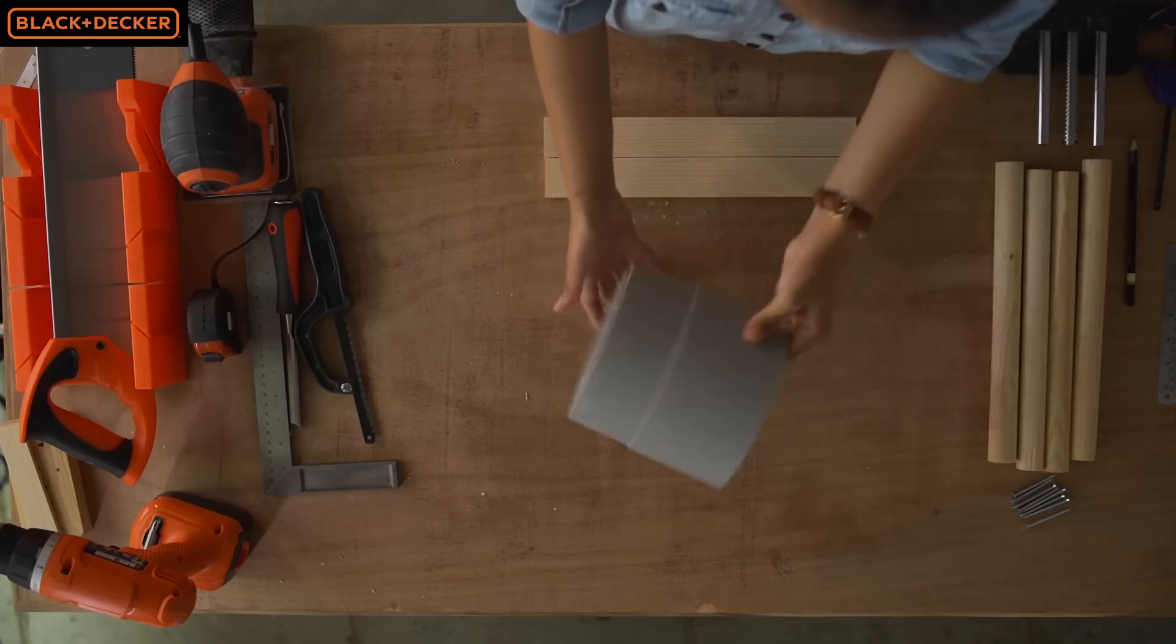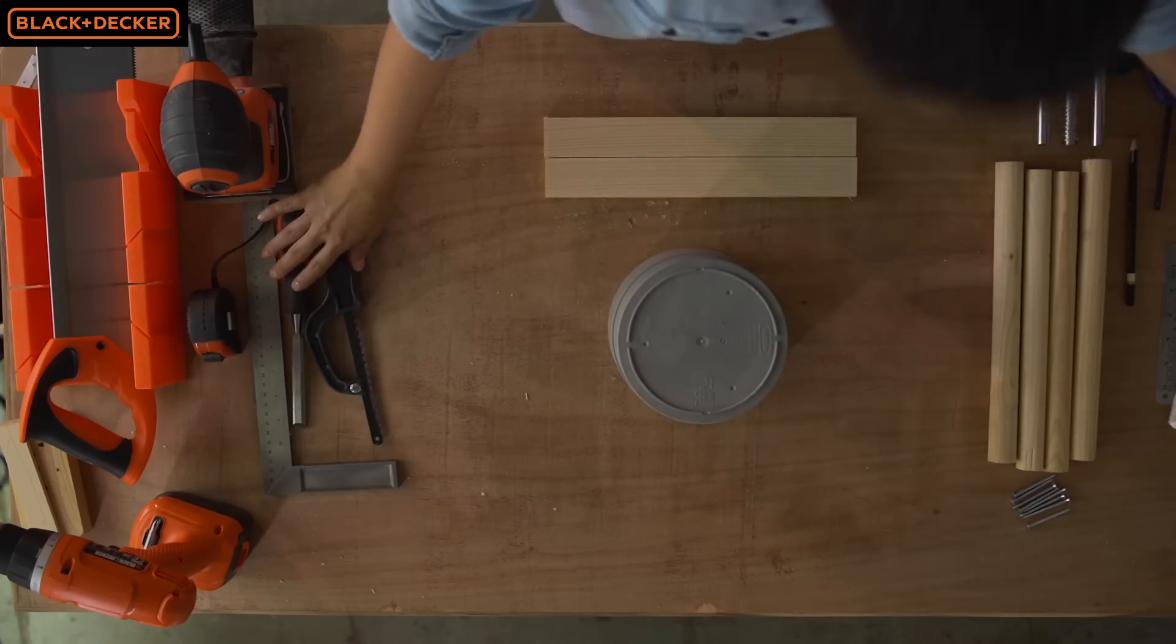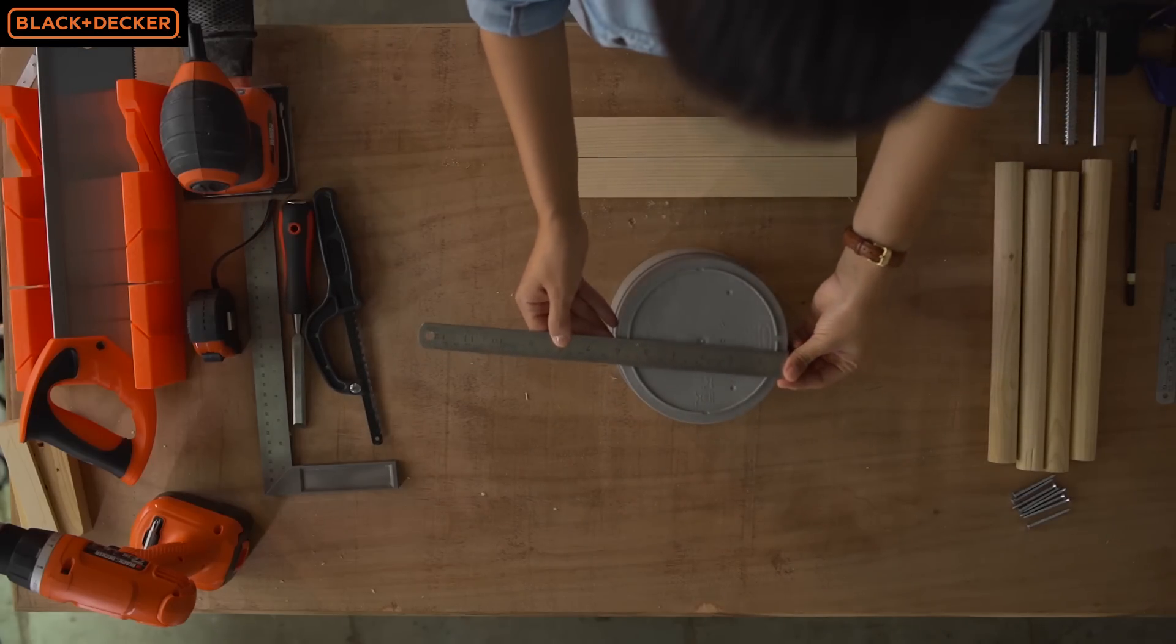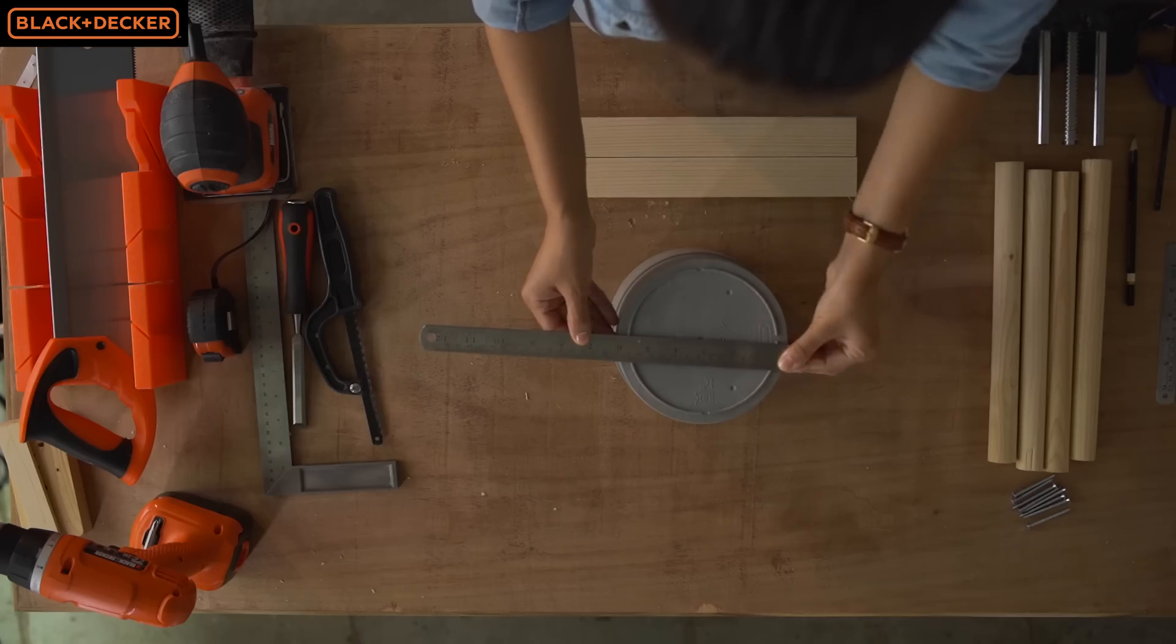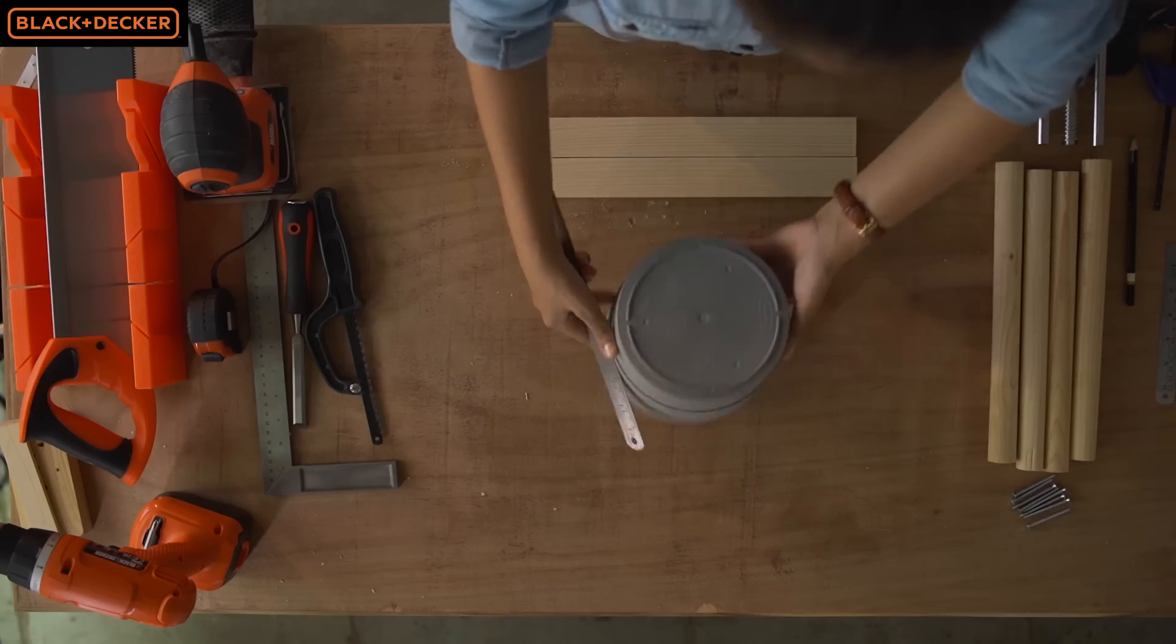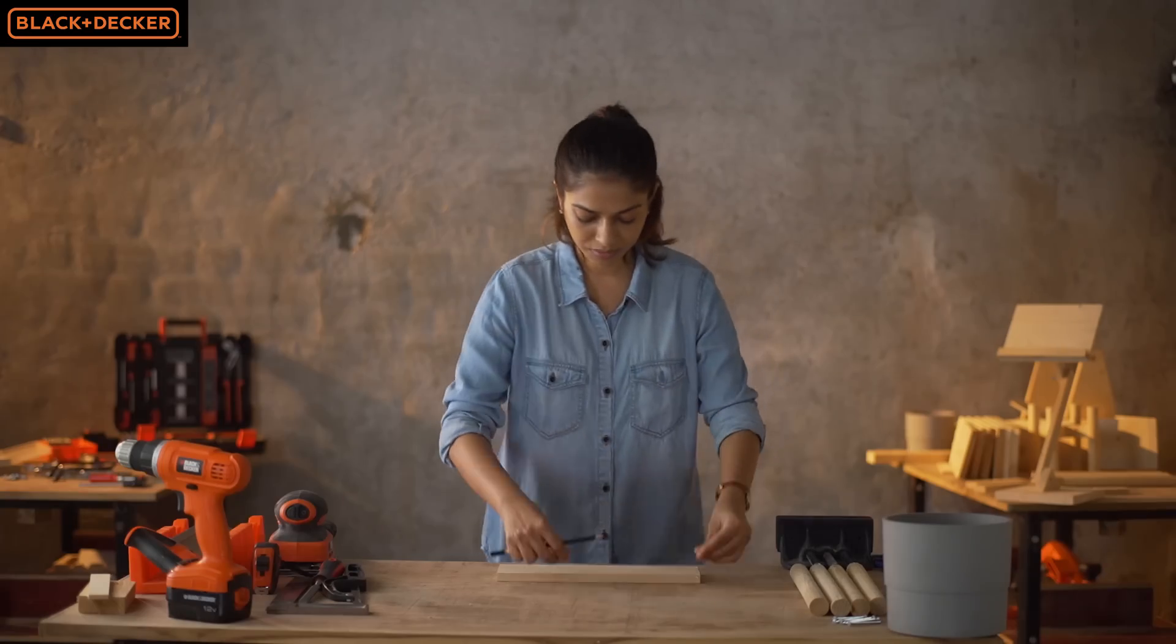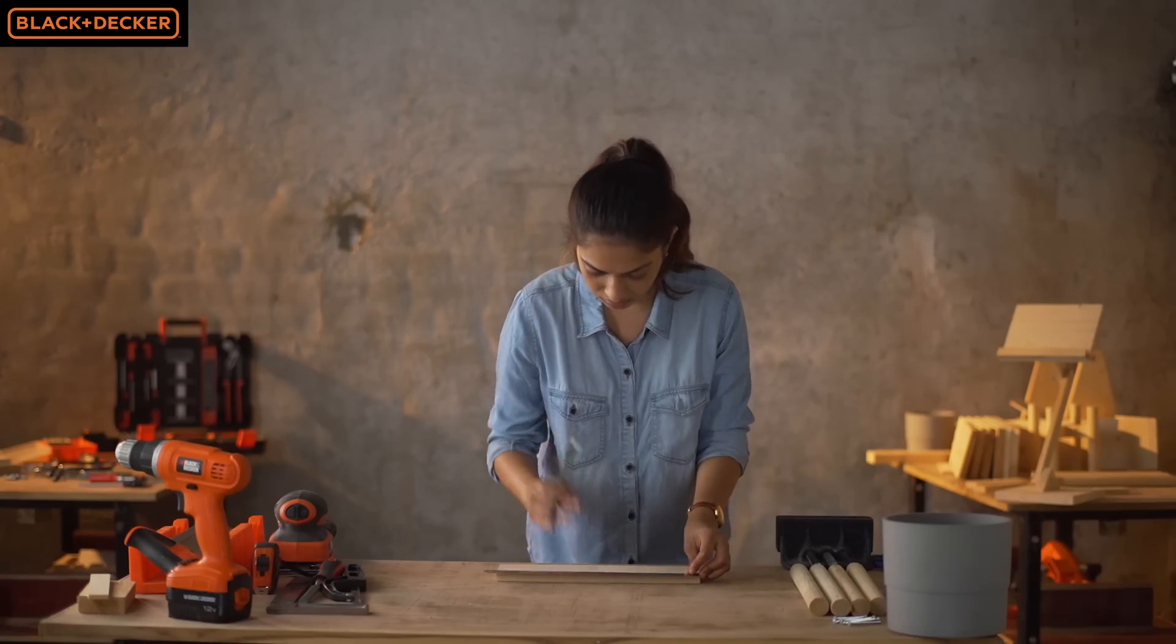I started by measuring my plant pot in order to figure out the size of the base of my plant stand. The diameter at the bottom measures six inches, so this will be the length of the beams on which the plant pot rests.